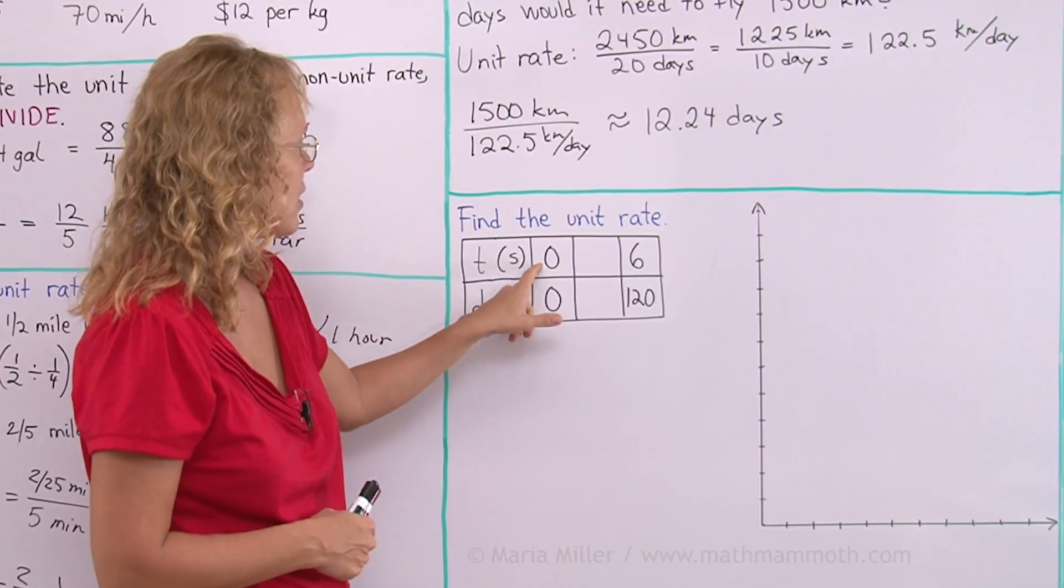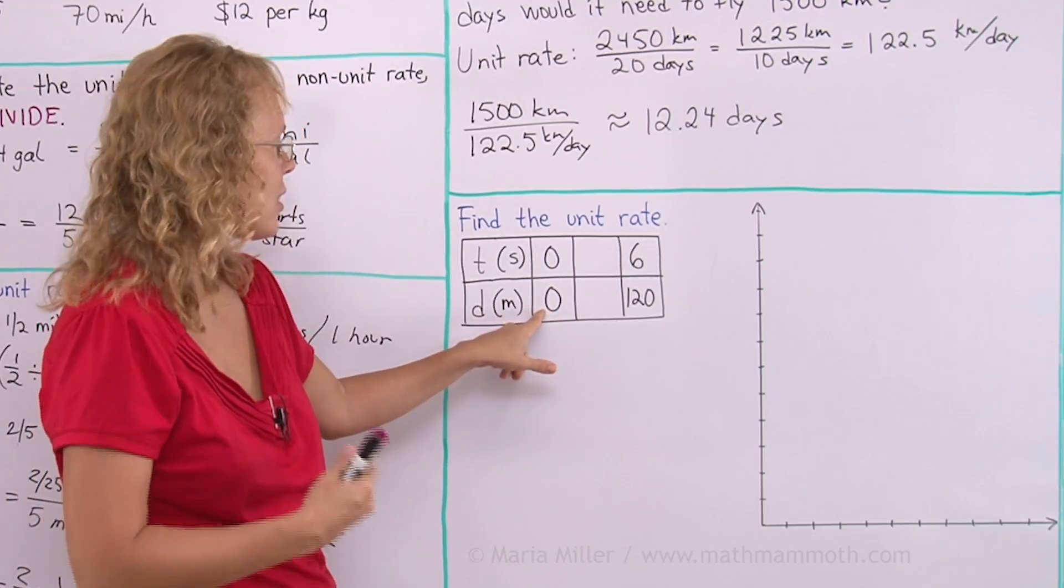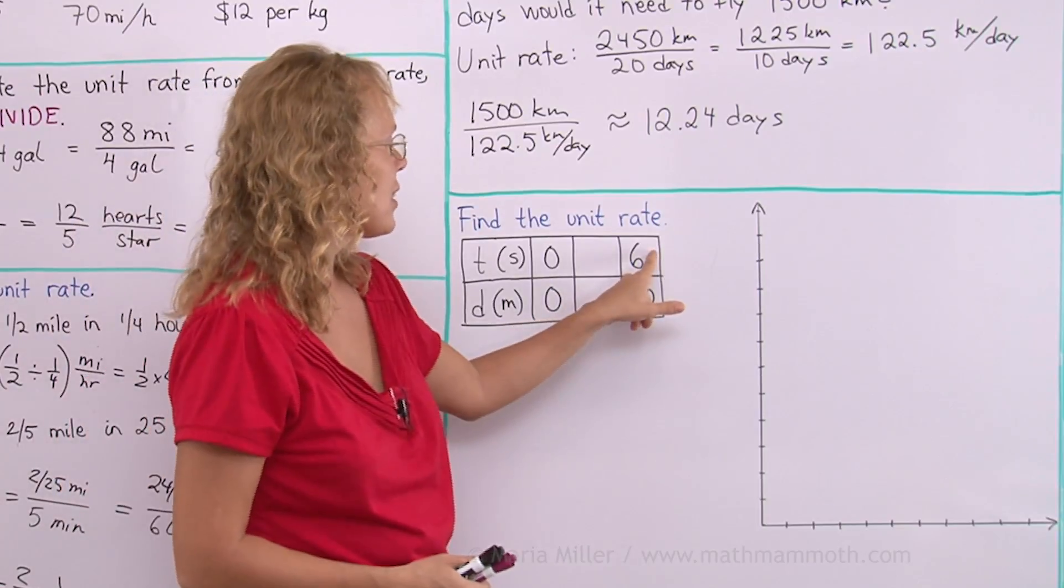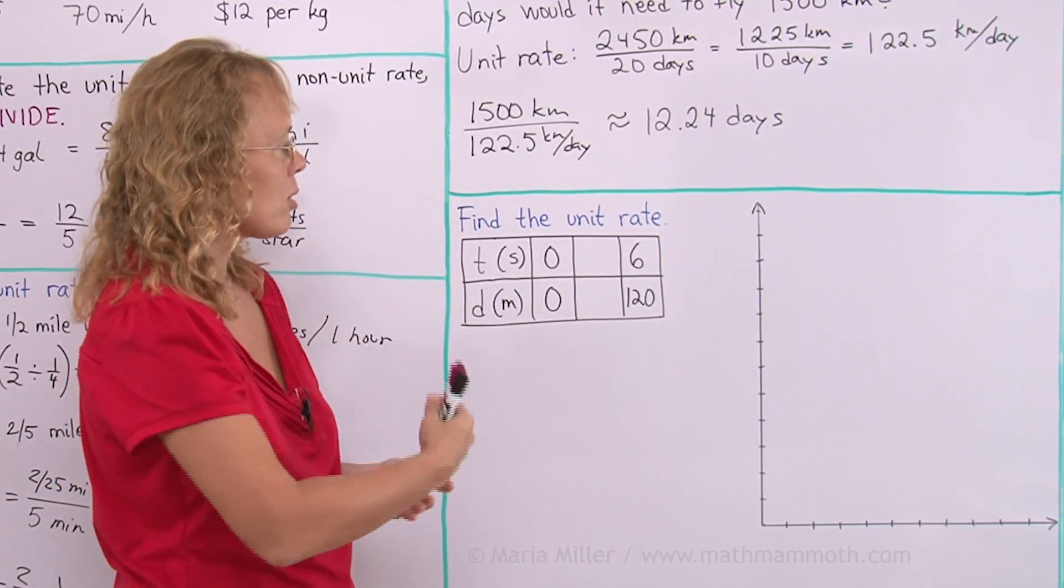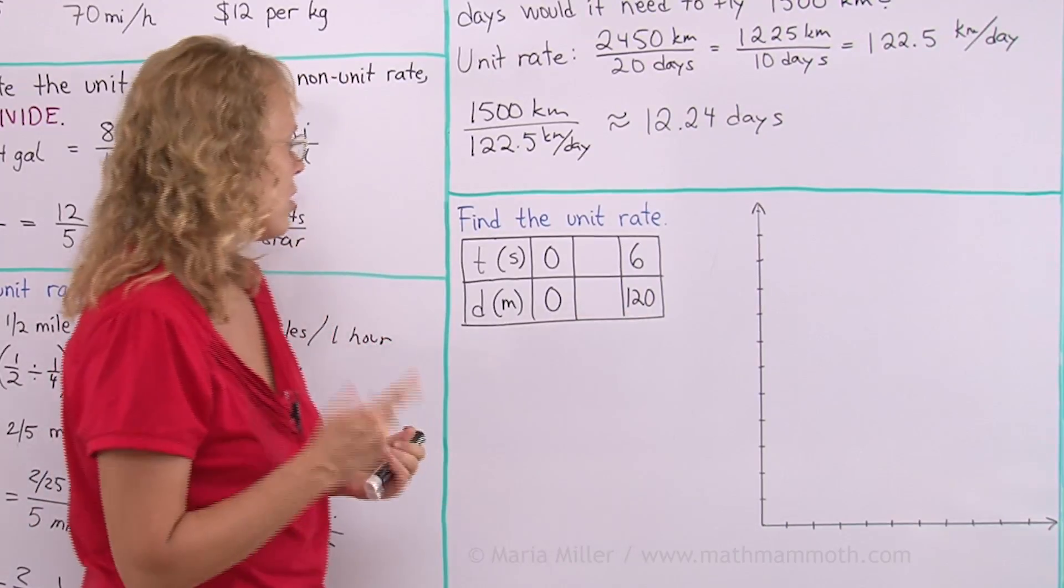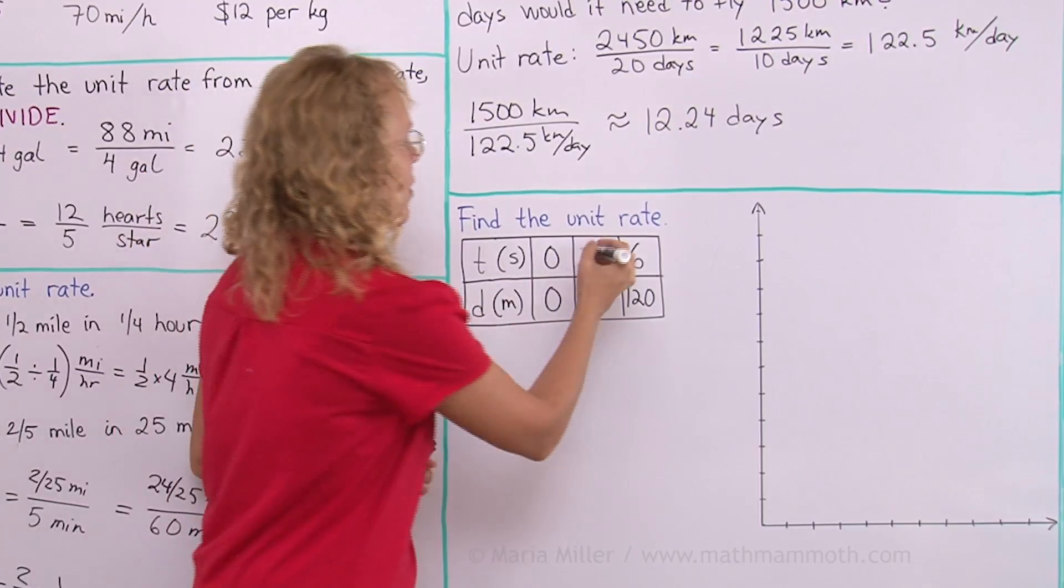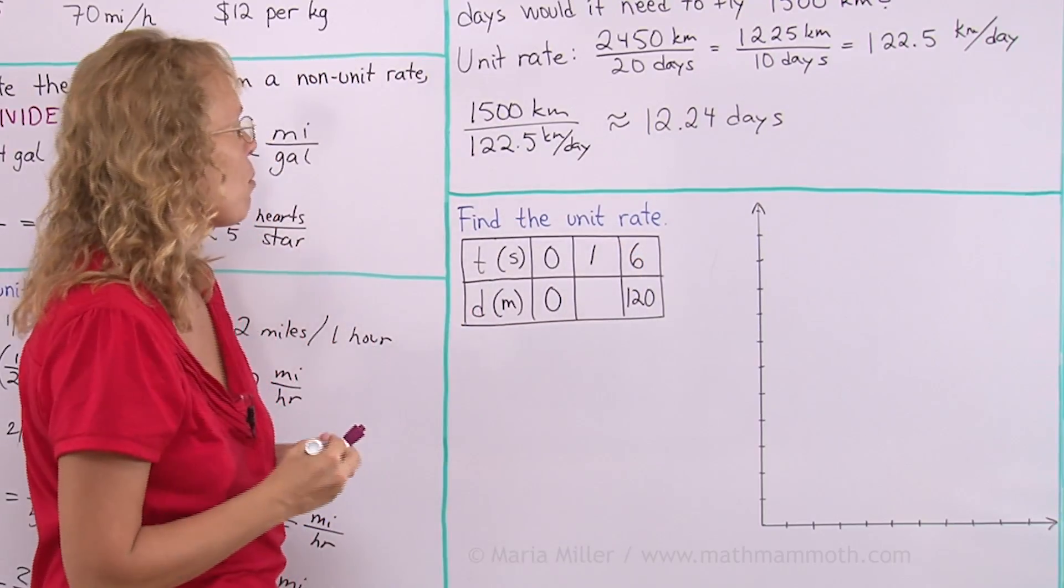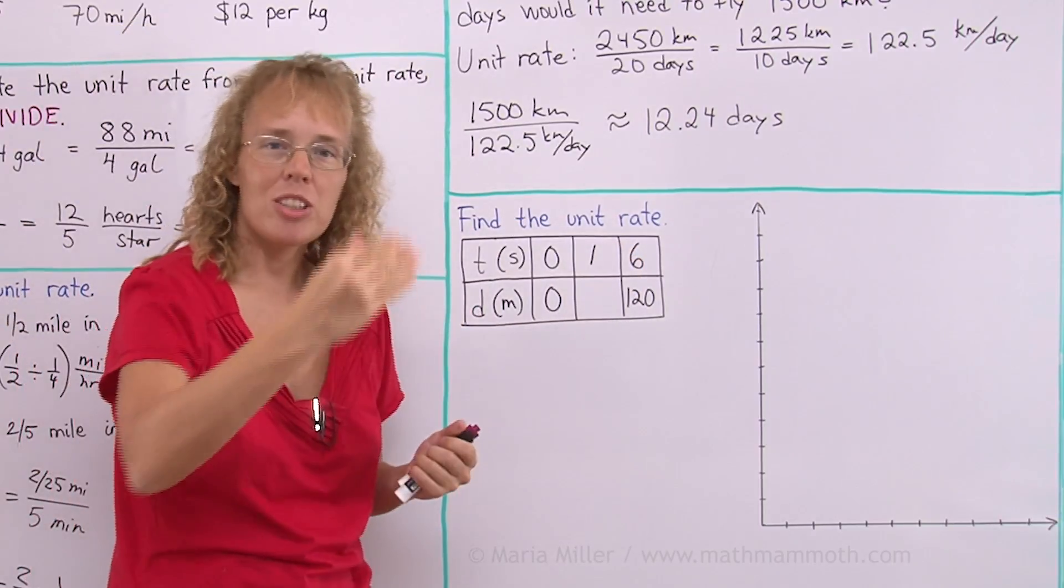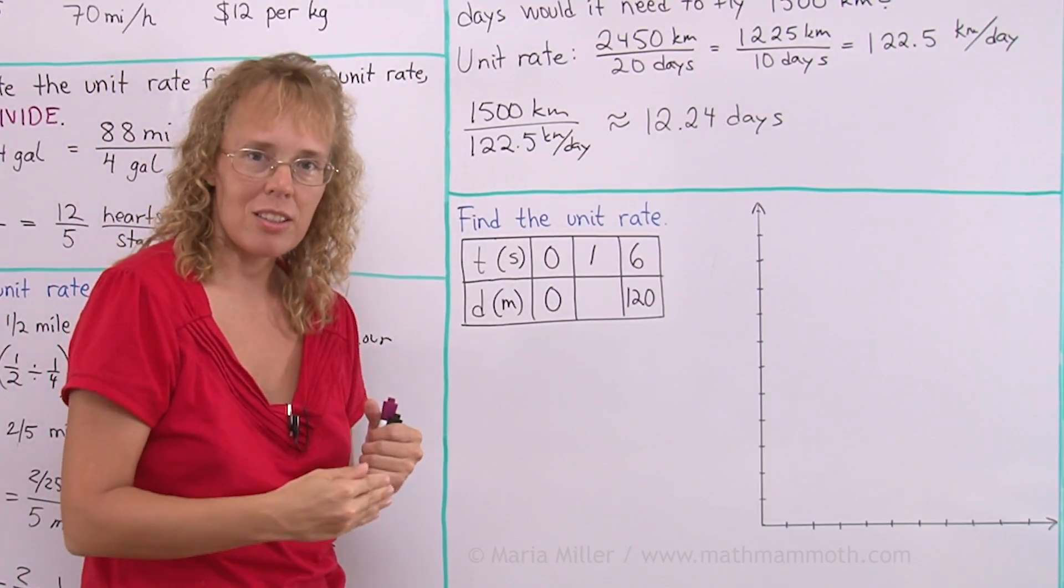And at zero seconds, there's no movement. The distance is zero. But at six seconds, this thing or person, whatever, has gone 120 meters. What's the unit rate would mean? Like I said, per one, in this case, one second. How many meters per one second? Because we are talking about speed. It is meters per second. It's not seconds per meters.